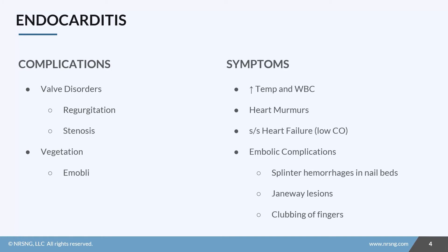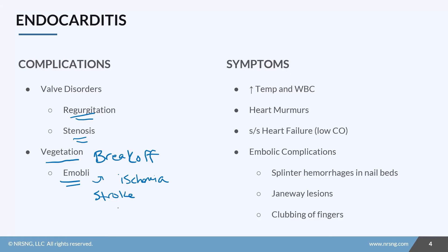Because of the inflammation and vegetation on the valves, they may not close all the way — causing regurgitation — or not open all the way due to vegetation in the way, causing stenosis. Most importantly, those vegetations can actually break off and become emboli, traveling through the vessels and causing ischemia. The three major embolic complications are stroke, MI, and pulmonary embolism.